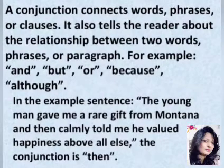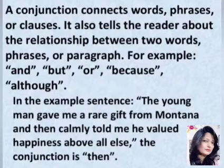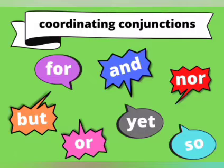A conjunction connects words, phrases, or clauses and tells the reader about the relationship between two words, phrases, or a paragraph. For example: and, but, because, although. In the example sentence, the conjunction is 'and then' — 'and' is the conjunction in this sentence. Some coordinating conjunctions are: for, and, nor, yet, so, or, but.